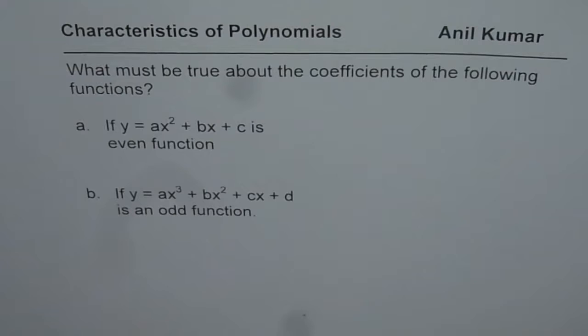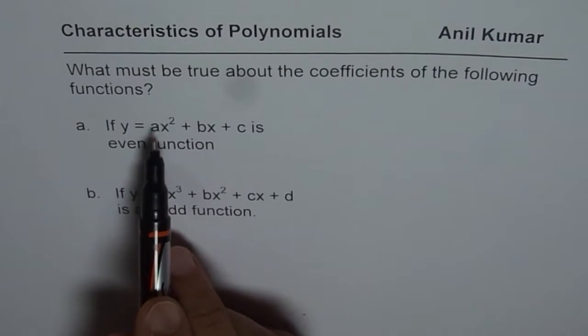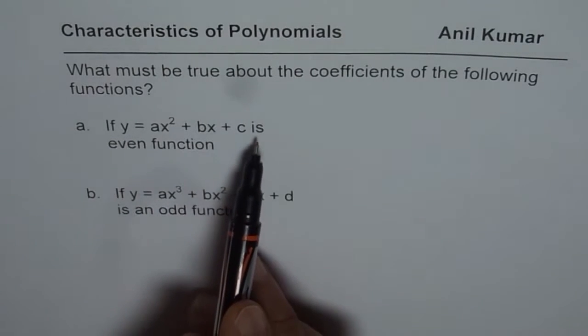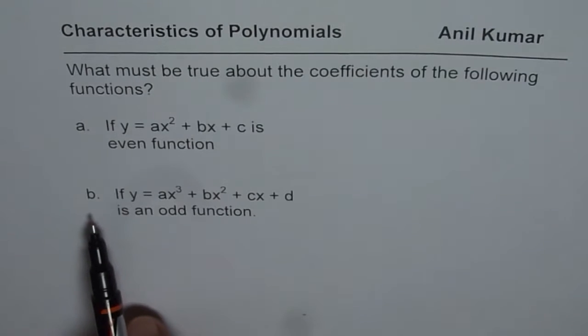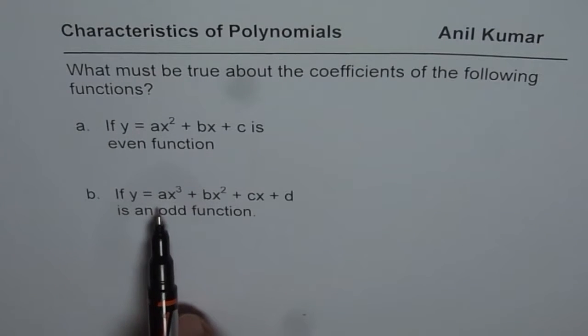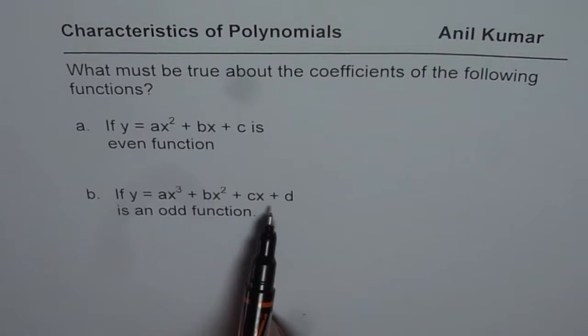The question here is, what must be true about the coefficients of the following functions? If y equals ax² + bx + c is an even function, and in part b, if y equals ax³ + bx² + cx + d is an odd function.